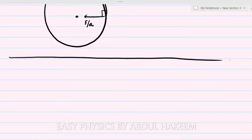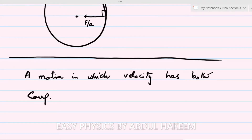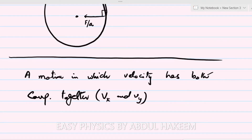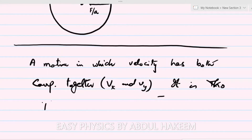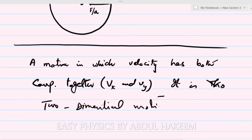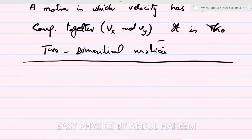Now come to the projectile motion. Motion in which the velocity has both components together — meaning vx and vy. So it is two-dimensional motion. The projectile motion is a two-dimensional motion because the velocity has both components vx and vy.